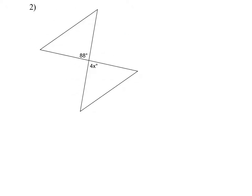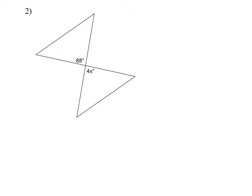So the next one, this type of angles, they are vertical angles, right? And vertical angles are congruent angles. So that means that 4x equals 88. And I'm just going to divide by 4. So x equals 22 degrees.